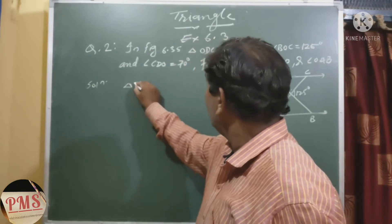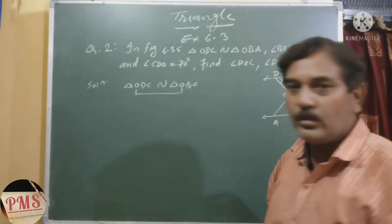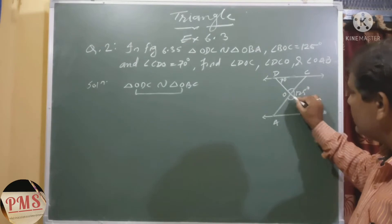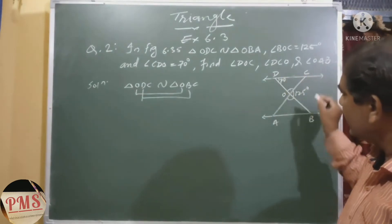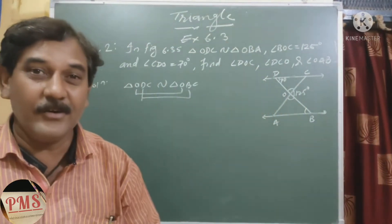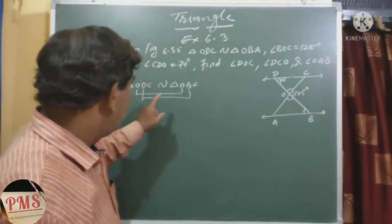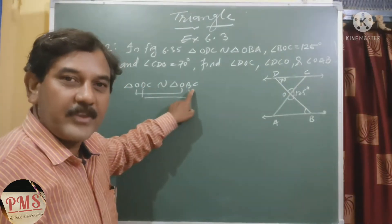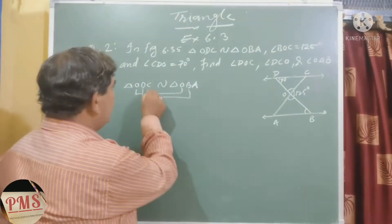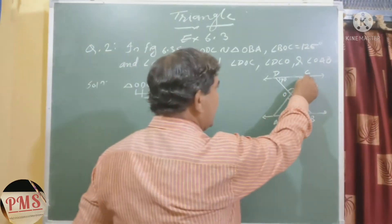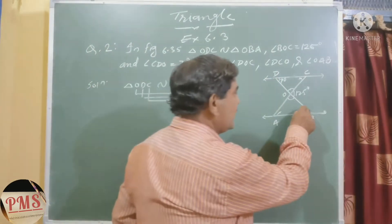Solution: Triangle ODC is similar to triangle OBA. This means angle O equals angle O, angle D equals angle B, and angle C equals angle A, because both triangles are similar — corresponding parts are also equal. The measurement of angle D is equal to 70 degrees.